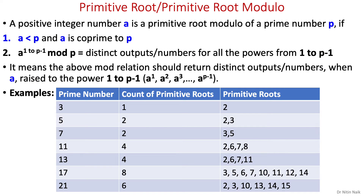Here in condition 2 we have rewritten the relation a to the power 1 to p minus 1 mod p, along with some examples of prime numbers and their primitive roots. Primitive roots are very useful in cryptography — we will use them in the Diffie-Hellman key exchange algorithm.